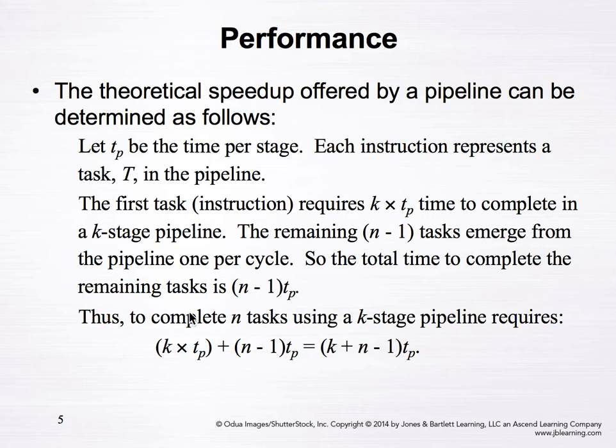To complete n tasks using a k-stage pipeline requires k times tp for the first instruction and n minus 1 times tp for the remaining n minus 1 tasks. The total is k plus n minus 1, multiplied by tp. That's the performance of the k-stage pipeline for n tasks.